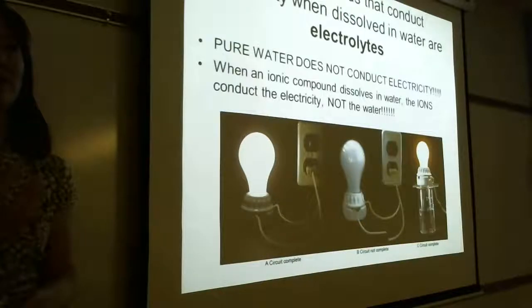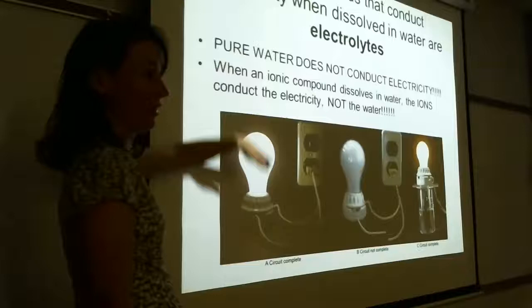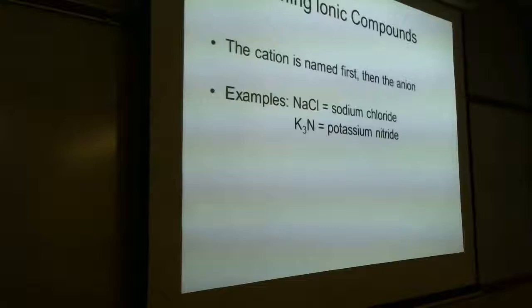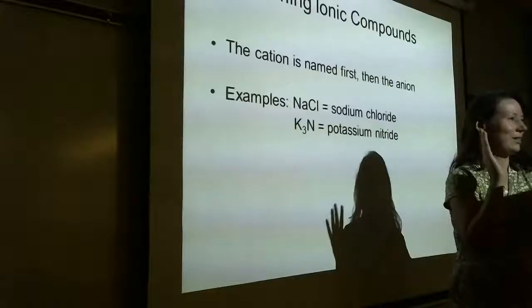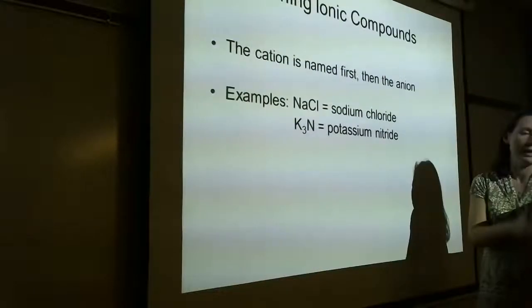It's important to understand that the properties of individual elements versus the properties of the compound are not the same. Also, when an ionic substance dissolves in water, it's not the water that conducts electricity — H₂O is actually a poor conductor. It's the ions dissolved in the water that conduct. Pure water is not a conductor; it's what's dissolved in the water.